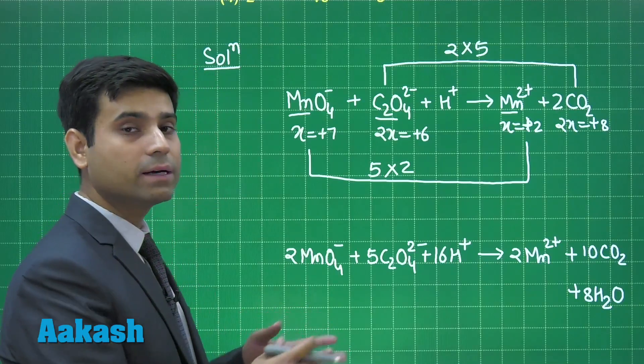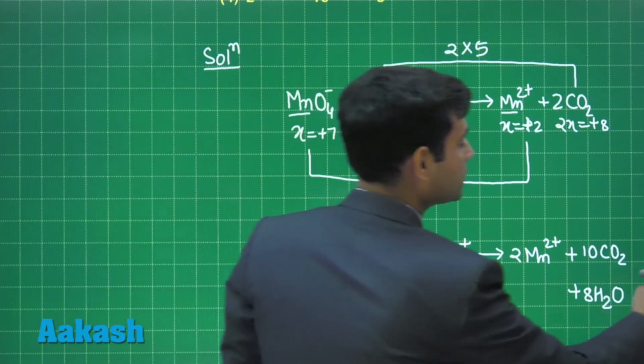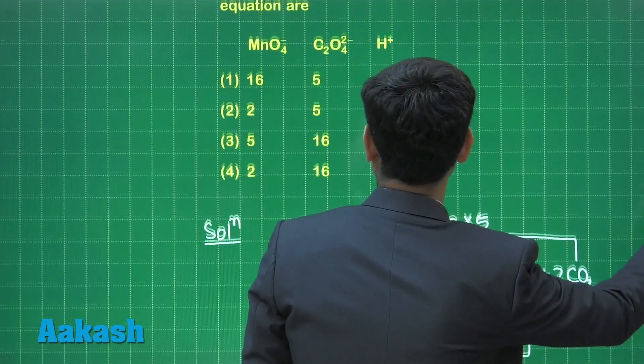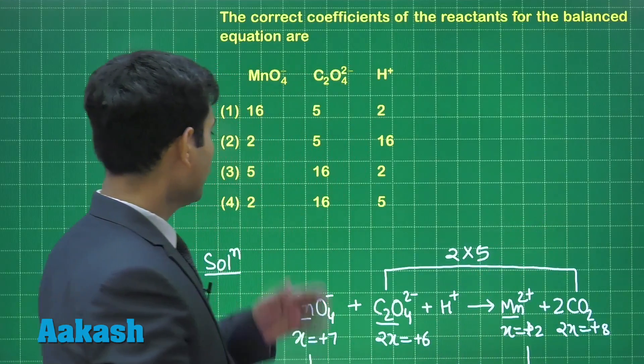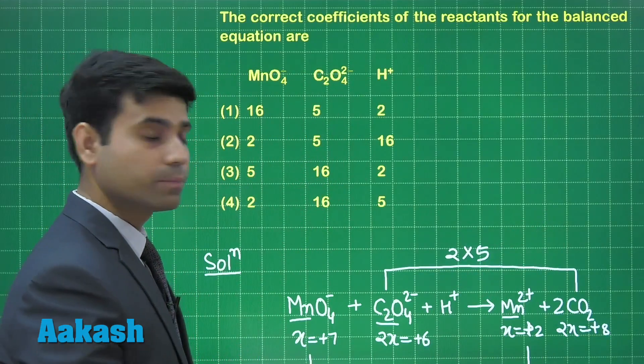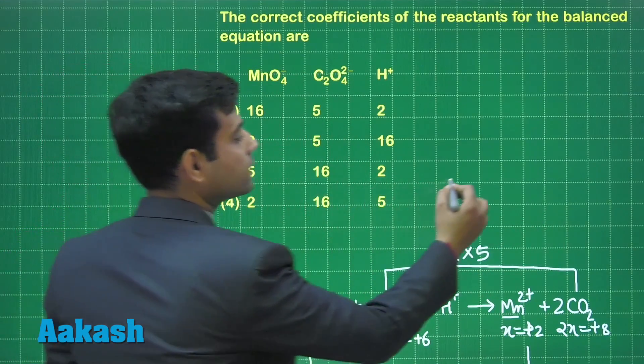So the coefficients are 2, 5 and 16. Let us go through the options. 2, 5 and 16 is option 2. So the correct answer for this question is option 2.